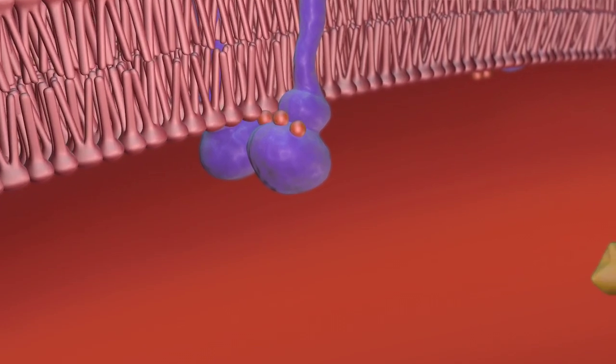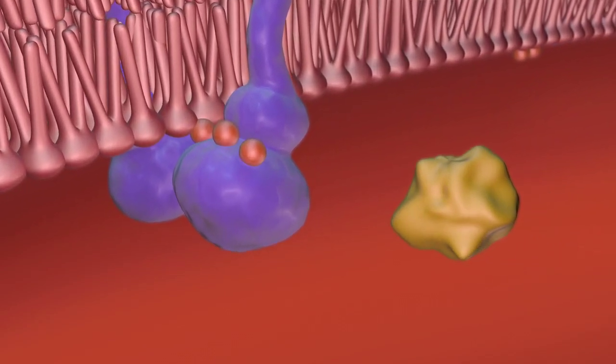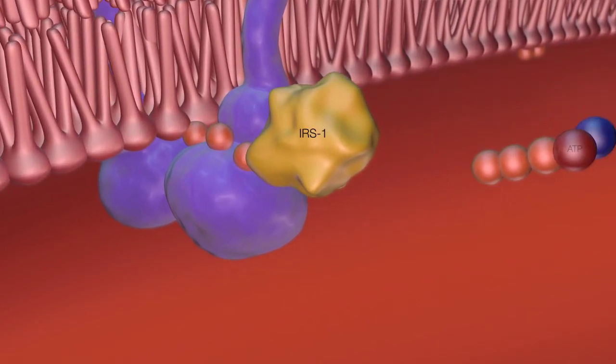The activated insulin receptor recruits an insulin receptor substrate 1 protein, labeled IRS1.